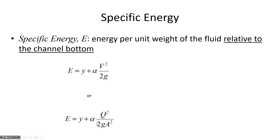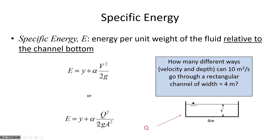Let's consider a rectangular channel 4 meters wide. We like rectangular channels because the area is simply depth times width, whereas in a trapezoidal channel the top width is constantly changing as depth changes. Let's say we've got a 4-meter wide channel carrying 10 cubic meters per second, but we have the ability to change the slope. A steep slope or a shallow slope will adjust the flow depth for the same flow rate Q.